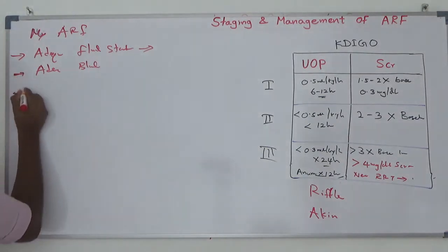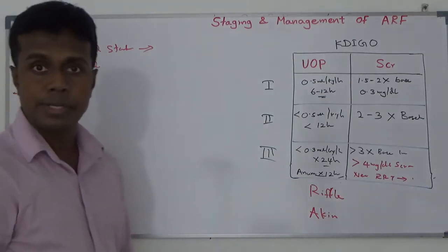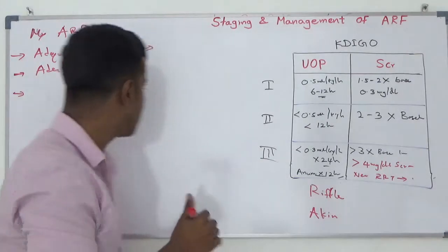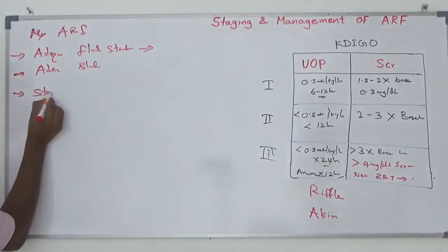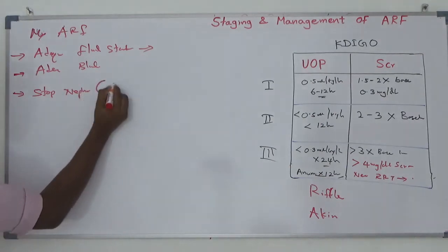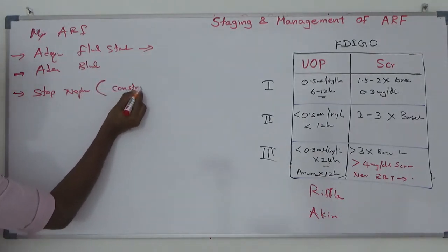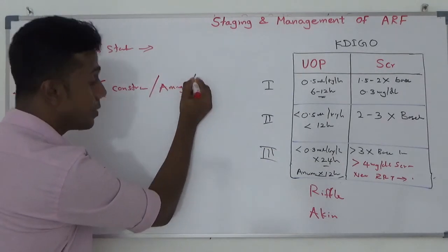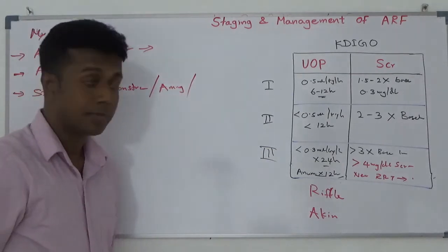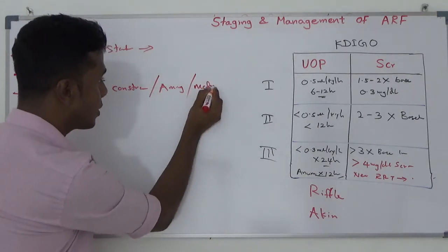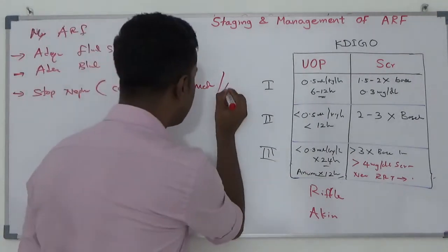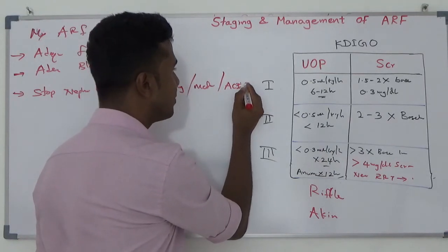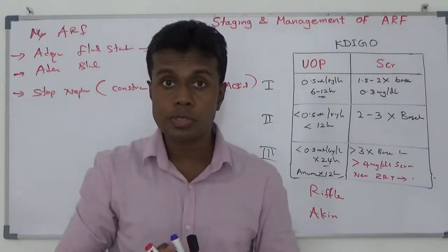Next: if your patient is on nephrotoxins, you have to stop them. It may be contrast, nephrotoxic drugs like aminoglycosides, metformin, or ACE inhibitors — you have to stop those nephrotoxic drugs.